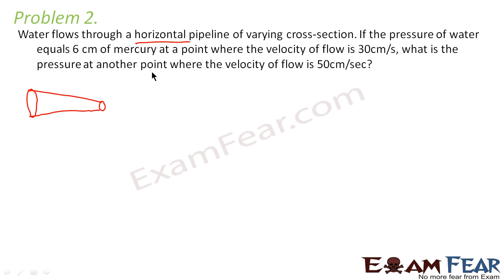what is the pressure at another point where the velocity of flow is 50 cm per second? Let us consider two points P1 and P2 or let us consider these two points as R1 and R2.